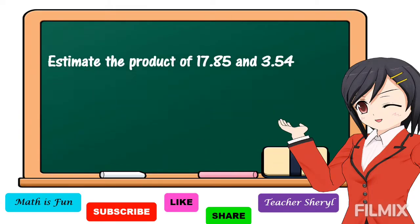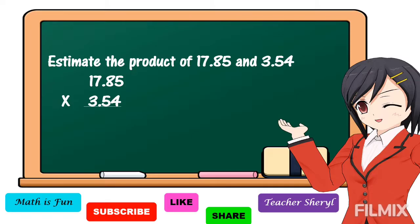Another example: estimate the product of 17 and 85 hundredths and 3 and 54 hundredths. So we're going to round our factors to the nearest whole number. The highest place value for our first factor — is 17 and 85 hundredths closer to 10 or closer to 20? All right, 17 and 85 hundredths is closer to 20. How about our second factor, 3 and 54 hundredths? Is it closer to 3 or closer to 4? All right, 3 and 54 hundredths is closer to 4.